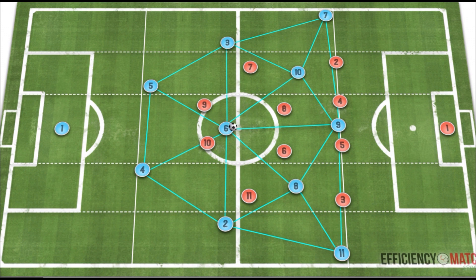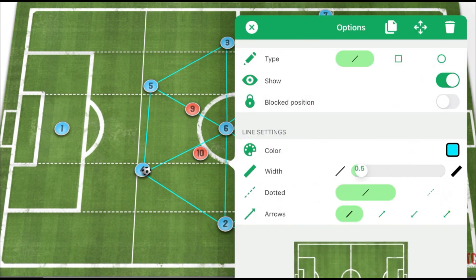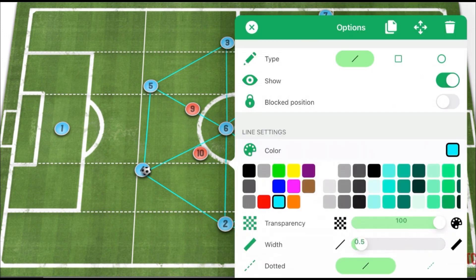These diagonal passing options are the most valuable type of connections. A diagonal connection into advanced positions from the holding midfielder is ideally what we want to see from our team. But if we look at the first line, we can see that the central defenders don't have access to the number six because of the blocking defenders — and this is where the misrepresentation often comes from.